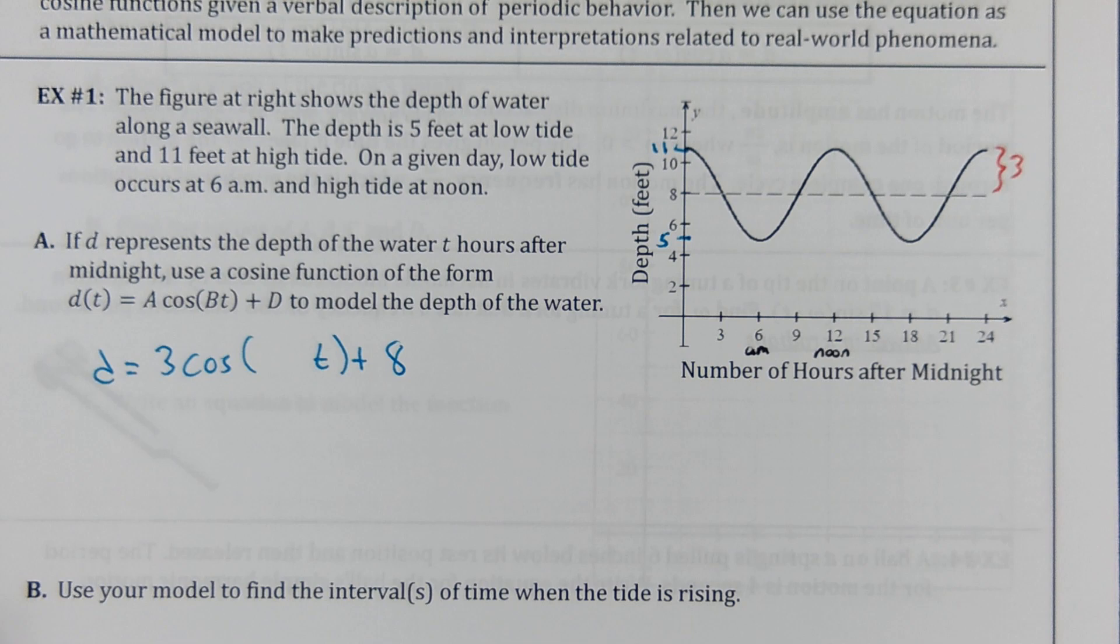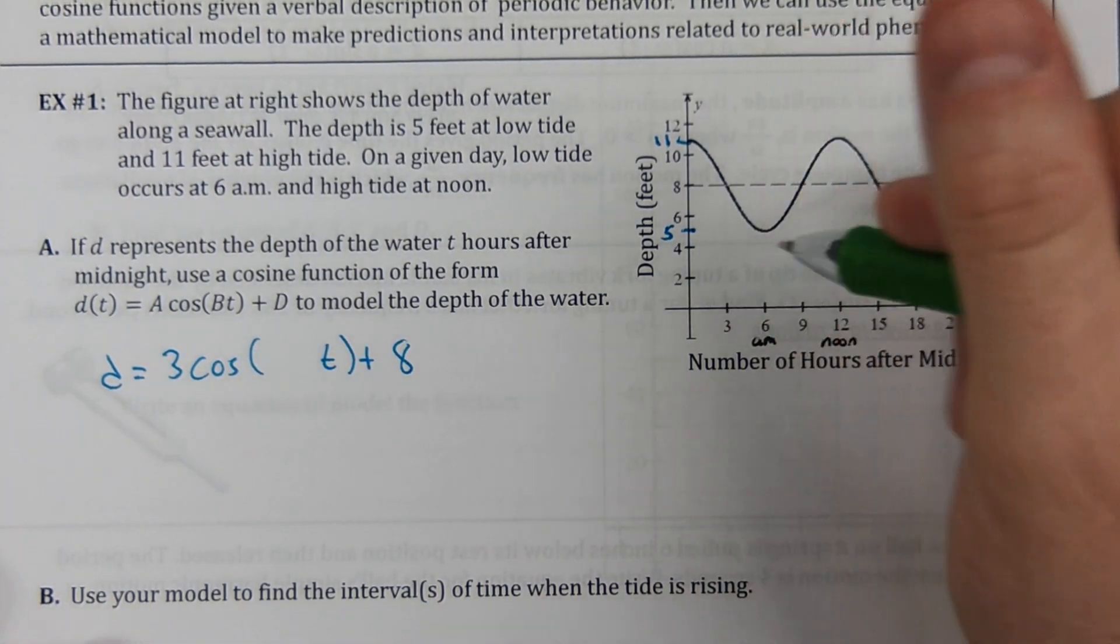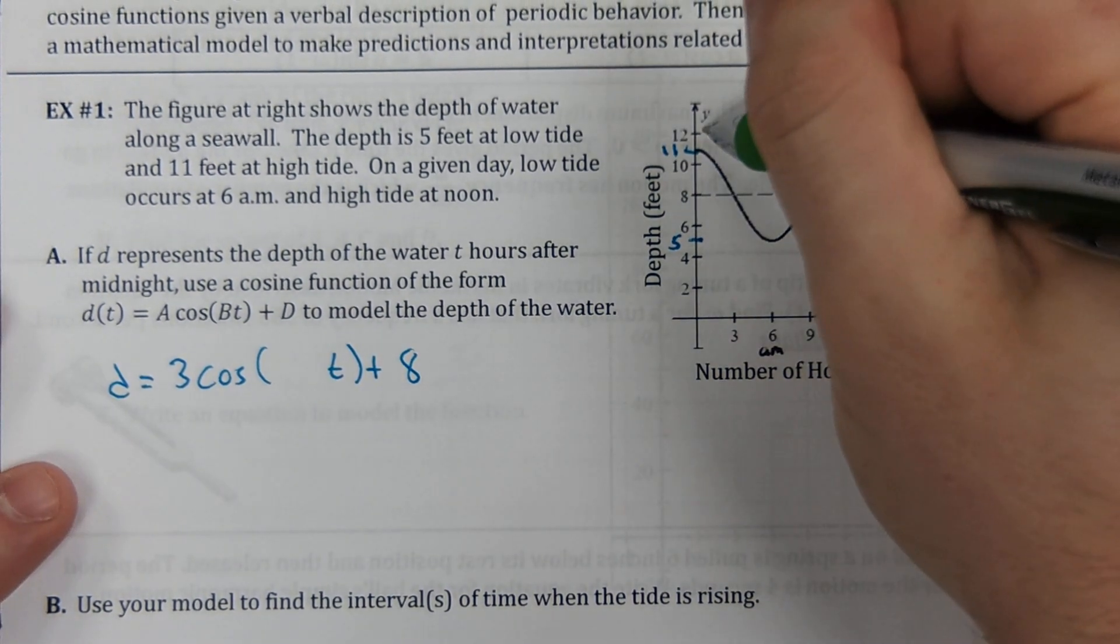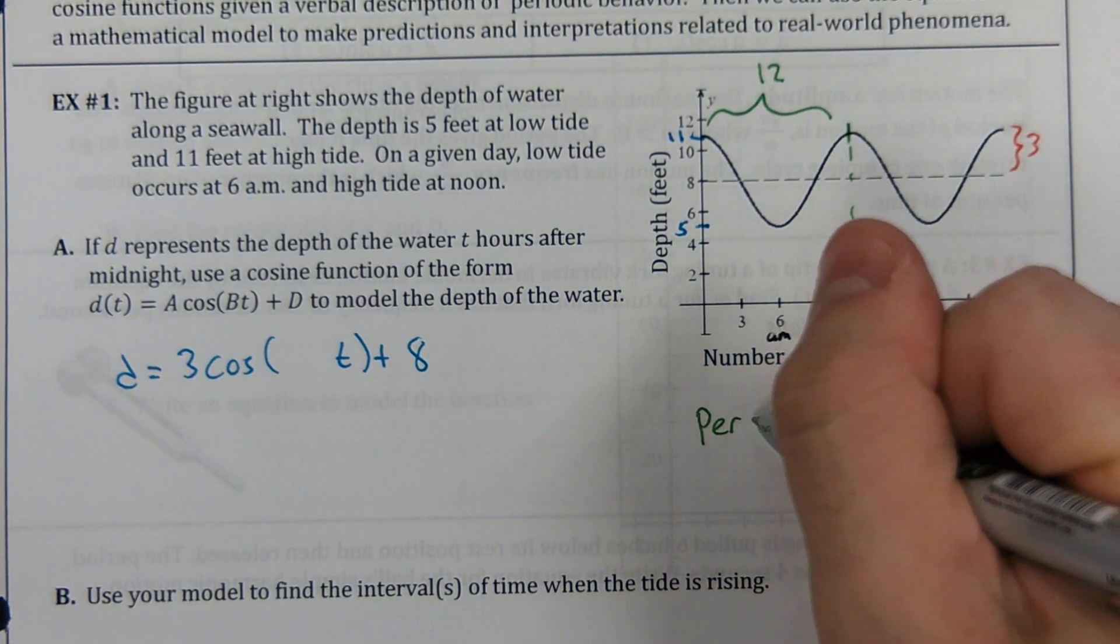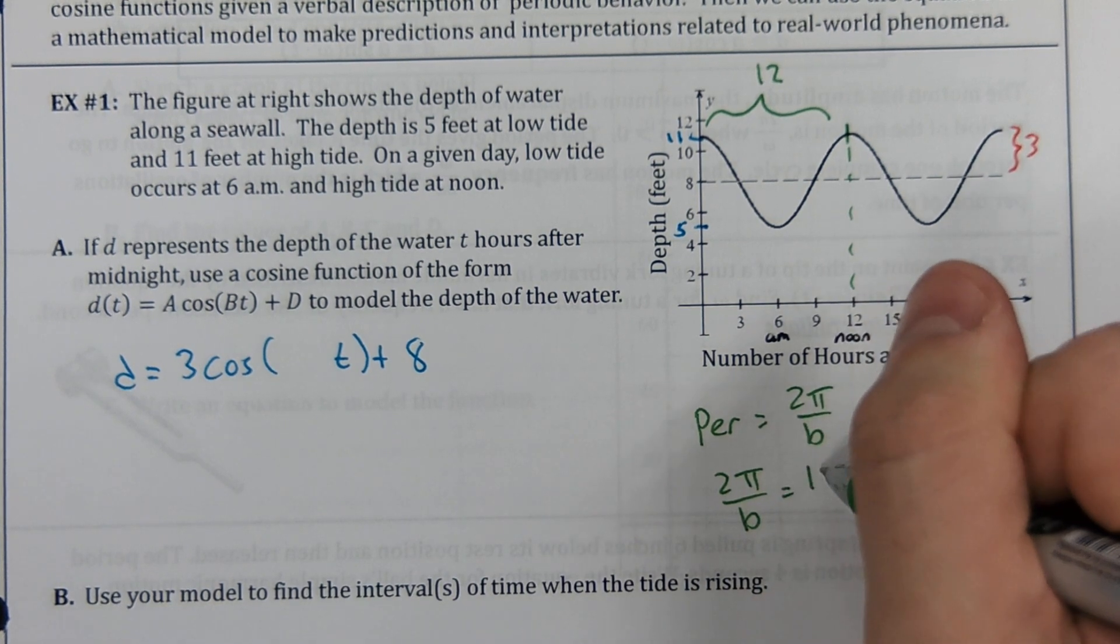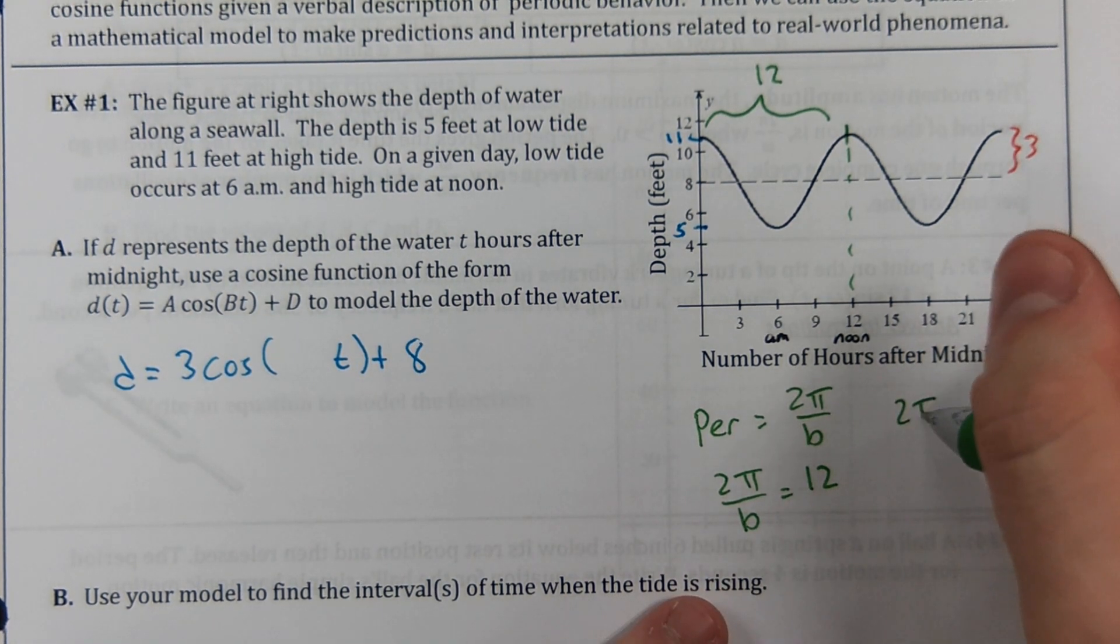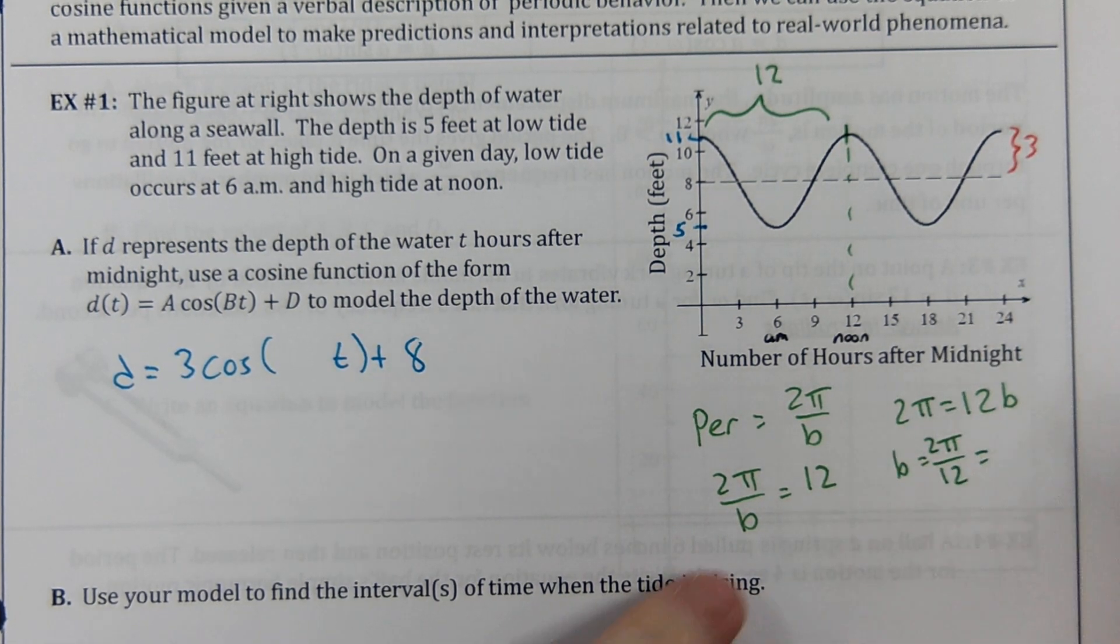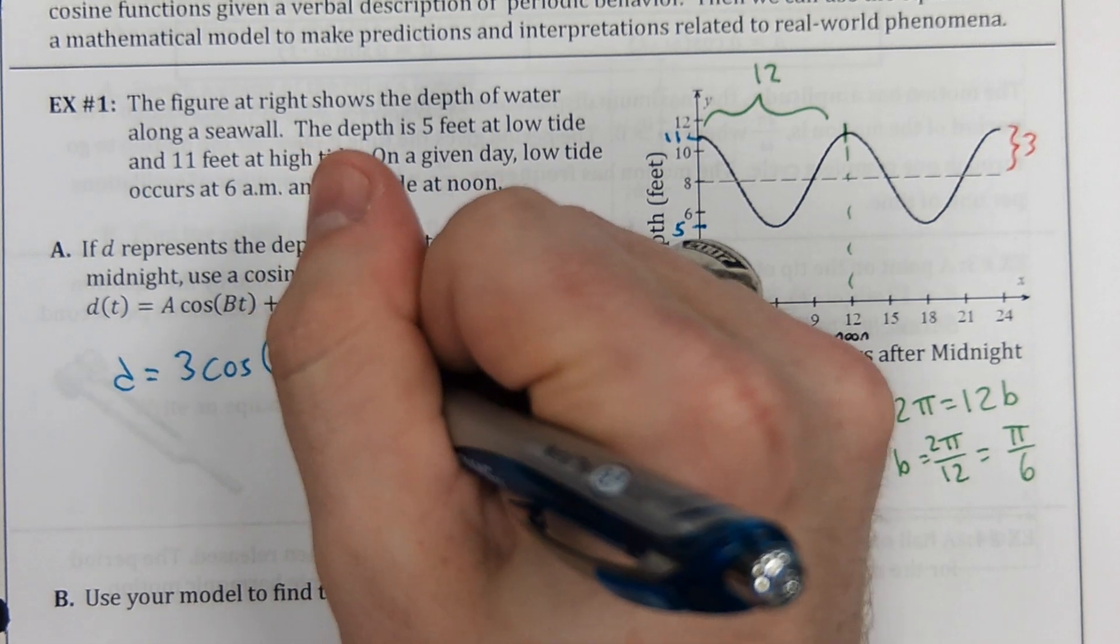Now, just like we talked about on Friday and probably the times before that, the hardest part about this is going to be deciding what B equals. Now we can see that the next time we reached a high tide was at noon. That means the period length is 12. Well, the period is supposed to be 2 pi over B. So period 2 pi over B, we know 2 pi over B equals 12. So if you multiply both sides by B, you will get that 2 pi equals 12 B. And divide both sides by 12. That reduces to pi over 6. So your B value is pi over 6. There it is.